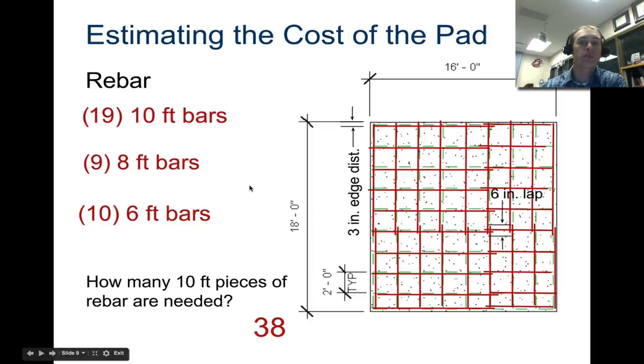If you're going to calculate the total number of rebar that you need, you're going to need 10 foot sticks. We need 1, 2, 3, 4, 5, 6, 7, 8, 9 over on this side. And then for full length sticks, we need 1, 2, 3, 4, 5, 6, 7, 8, 9, 10 going vertically. So we have 9 going this direction and 10 going vertically. That's 19 ten foot sticks.